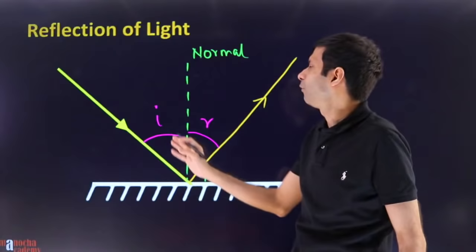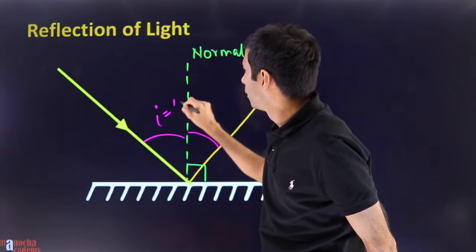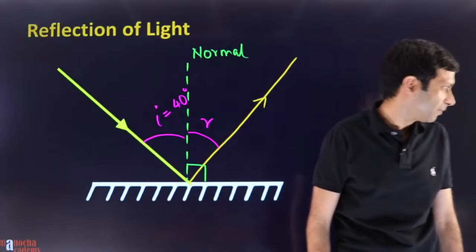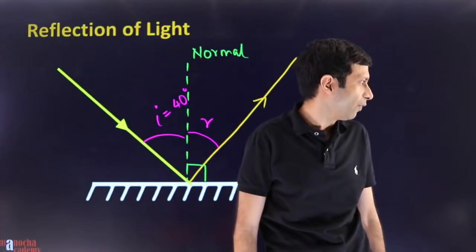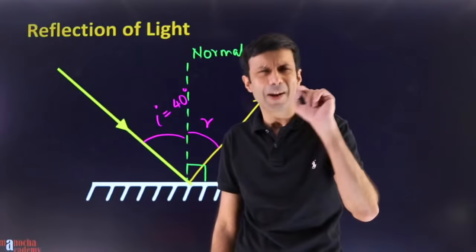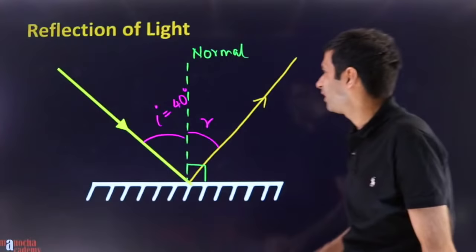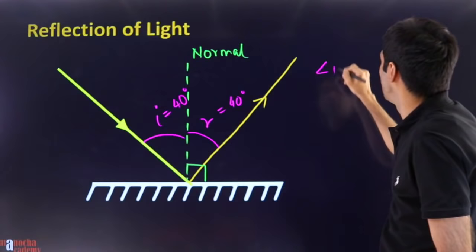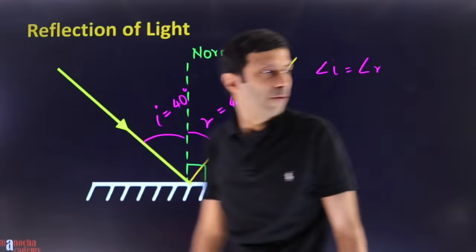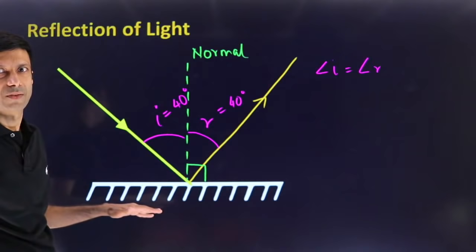According to the law of reflection, the angle of incidence equals the angle of reflection. So if the angle of incidence is 40 degrees, the angle of reflection will also be 40 degrees. This is the law of reflection — I equals R. This also holds for spherical mirrors — concave and convex. The other law states that the incident ray, the normal, and the reflected ray all lie in the same plane.